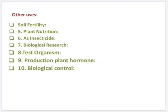Use of fungi as insecticide. Fungi like Cordyceps and Metarhizium are used as insecticides to control different types of insects. Use of fungi in biological research. Fungi like Neurospora, yeast, etc. have been used in genetical and physiological studies. Physarum polycephalum has been used to study DNA synthesis.